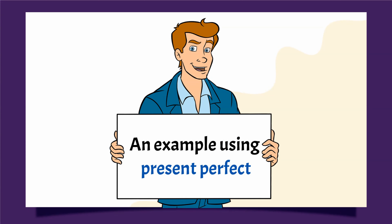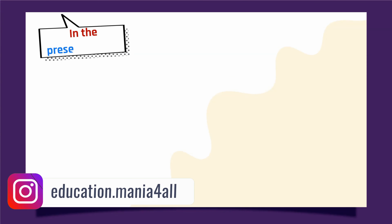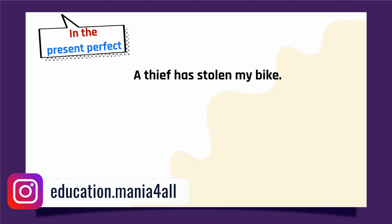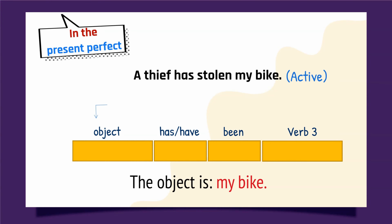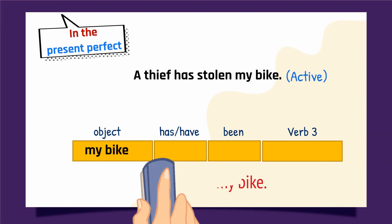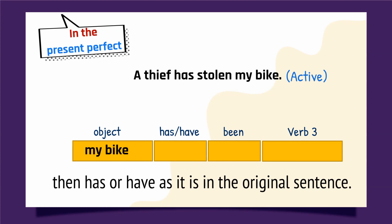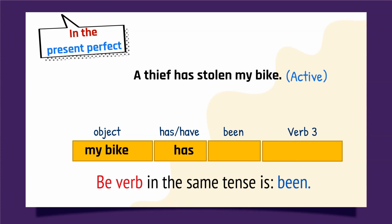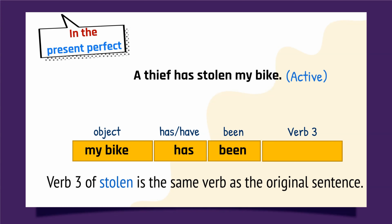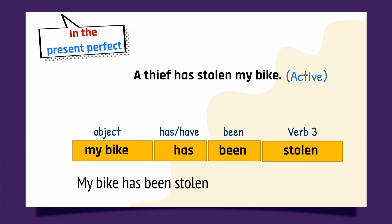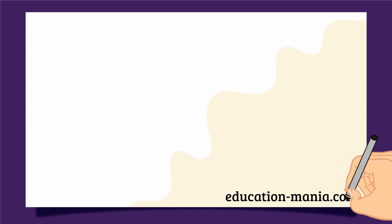An example using present perfect: 'A thief has stolen my bike.' The object is 'my bike'. Keep 'has' as it is in the sentence. The be verb in the same tense is 'been'. Verb 3 of 'steal' is 'stolen', the same verb as in the original sentence. Result: 'My bike has been stolen.' If we need to include the person, we add by: 'My bike has been stolen by an anonymous person.'